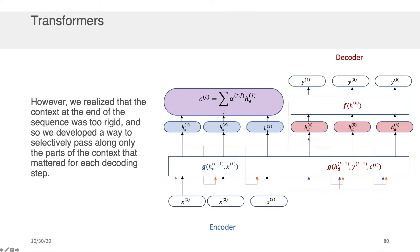However, in the last part of this lecture we ended up realizing that the context at the end of the sequence was too rigid, and so we developed a way to selectively pass along only the parts of the context that mattered at each decoding step.